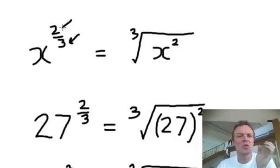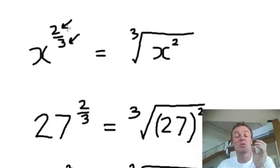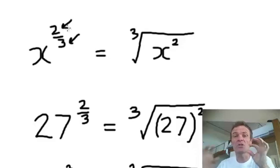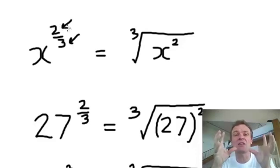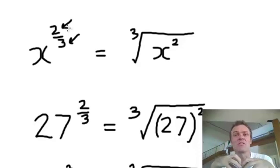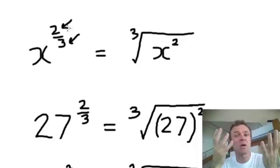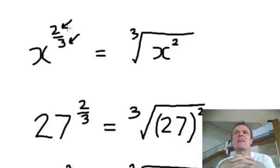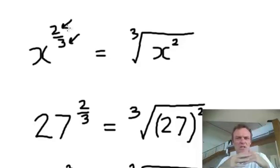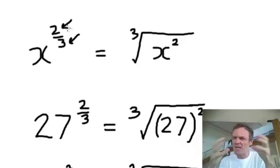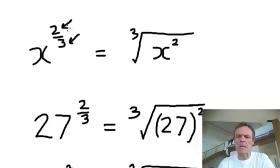The one on top, the numerator, means I want to square it. So I want to square this thing and then cube root it. Or, cube root it and then square it — and that's the better way. Don't make it huge before you're trying to make it small again. Why not make it small first?